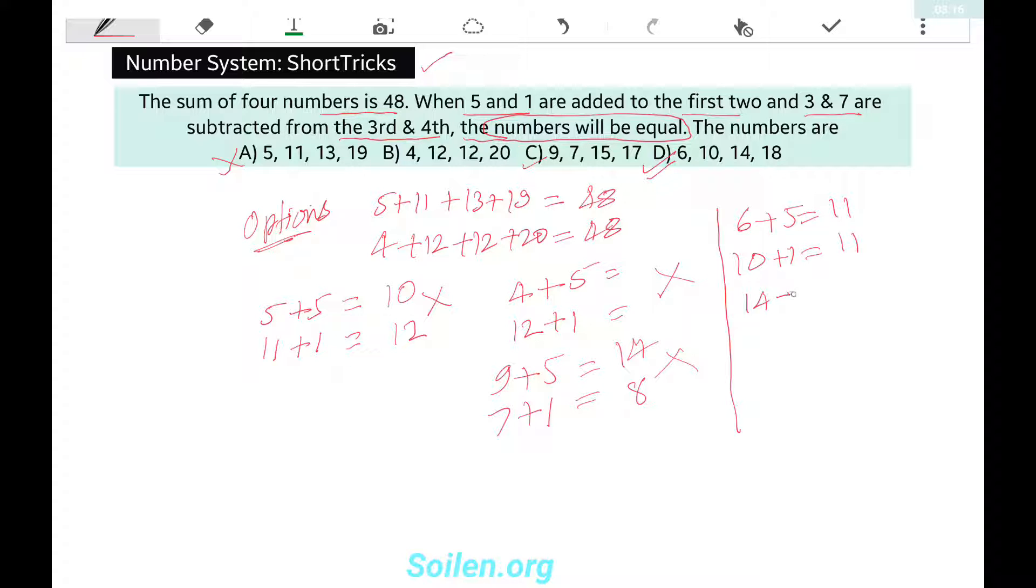14 minus 3 is 11, and 18 minus 7 is 11. All numbers are equal, so we are right that the fourth is the correct answer.